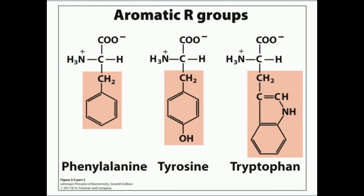The next group is the aromatic amino acids, and there are three of these: phenylalanine, tyrosine, and tryptophan. The aromatic amino acids all have, at least in some way, a characteristic benzene ring — a six-carbon ring with three double bonds conjugated around it. Tryptophan is a little different because its R group is an indole ring, with an additional five-membered ring containing nitrogen. Tyrosine has a hydroxyl group para from the rest of the amino acid.